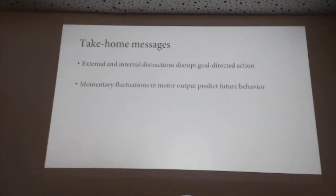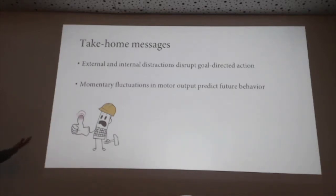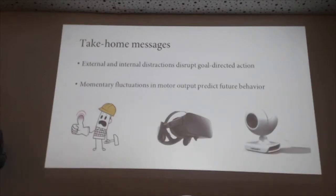These momentary fluctuations in motor output can actually be used to predict future behavior. This has implications both theoretically — helping us understand interactions between the motor system and cognition, and what factors determine where attention is prioritized — and practically. In workplaces where slight motor variations can cause serious problems, we might be able to track performance in real time to see instances where people are less focused. Given that technology now allows tracking behavior in relatively high precision and analyzing data in real time, in theory we could use this to help prevent accidents where motor variability can lead to costly errors. Thank you.